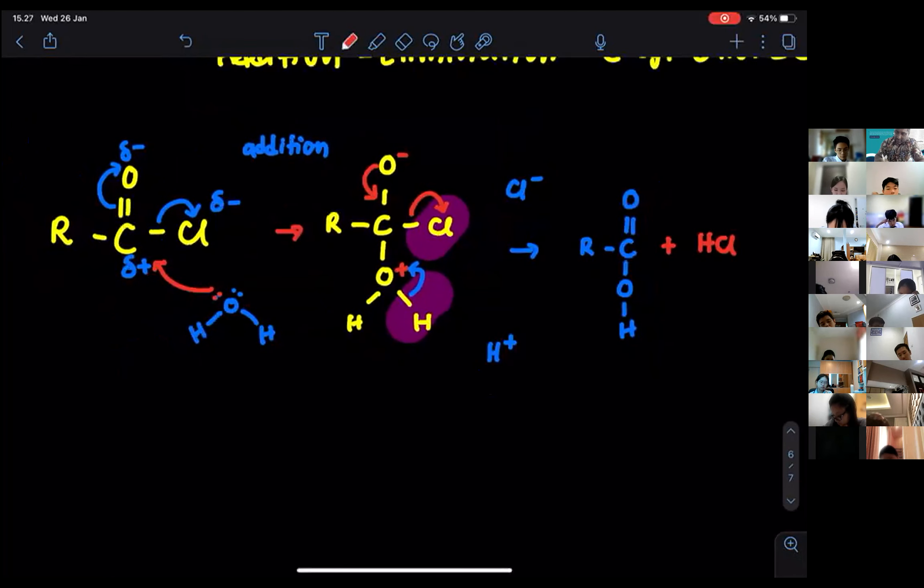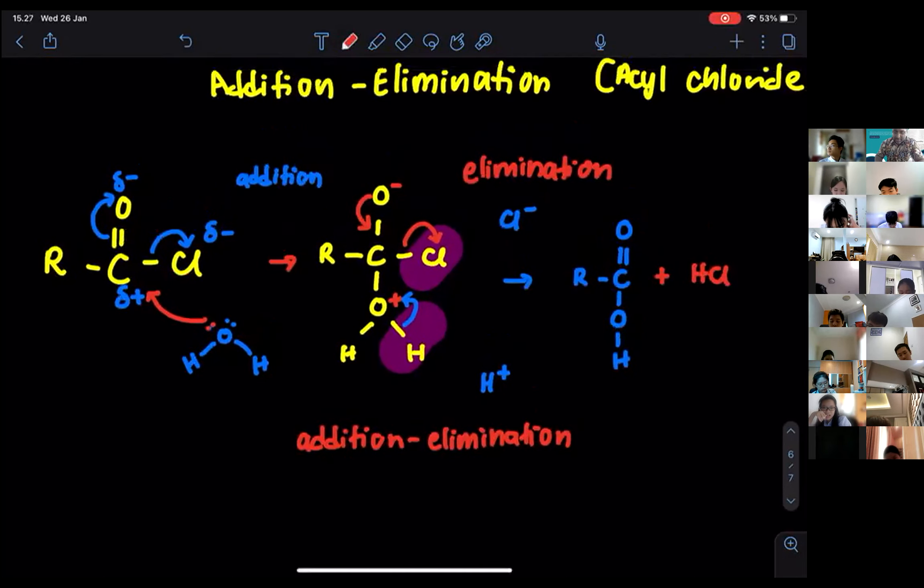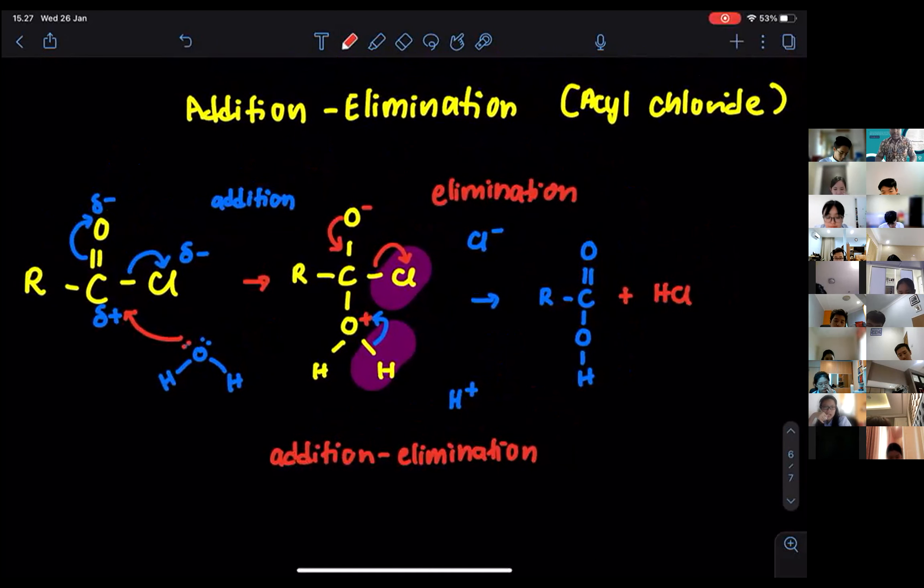Once you get that, then you will get plus HCl. This is, it's going to be the elimination part. So you join all of them together, you will get what we call as addition elimination reaction. So that is going to be the mechanism of the reaction involving acyl chloride. Now, can I do the same thing for other compounds?